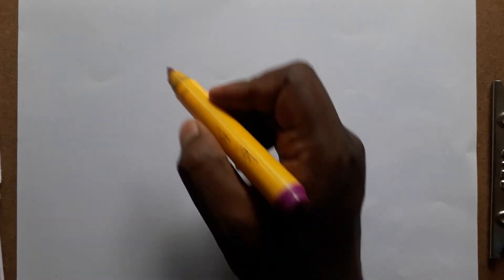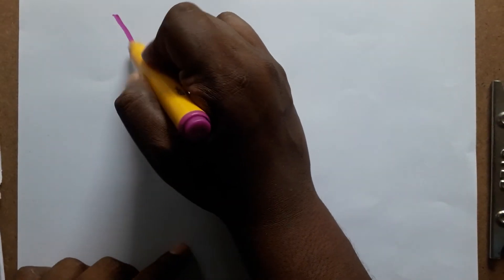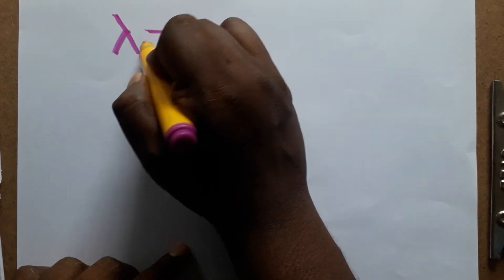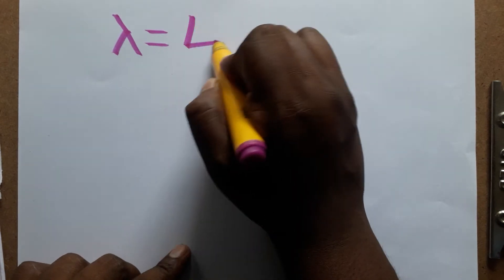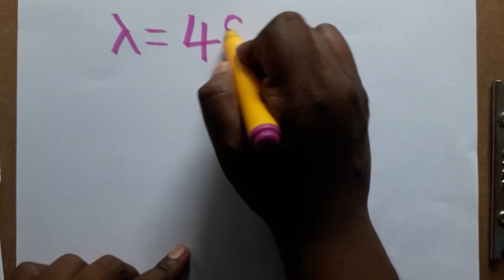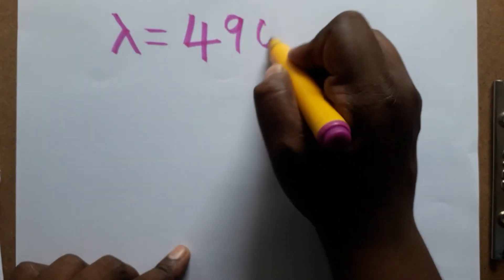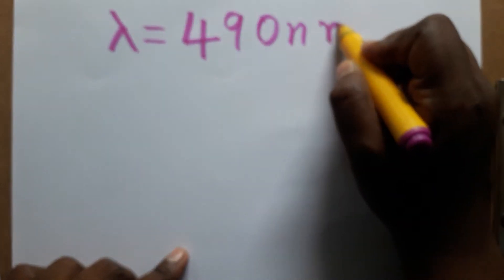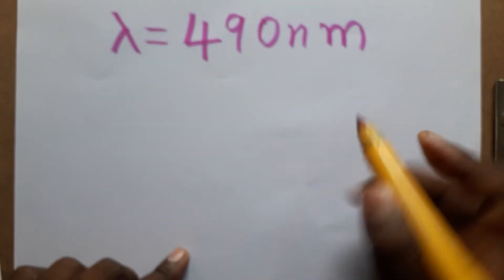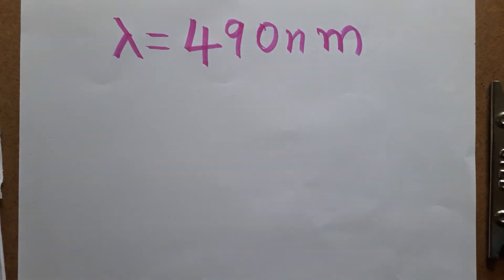Hello students, today we are going to learn how we can find energy from wavelength. For example, I have taken 490 nanometers, and from here we will find the energy in joules — converting nanometers to joules is what we are going to learn.